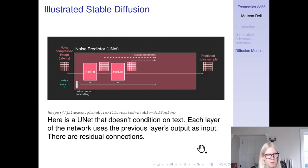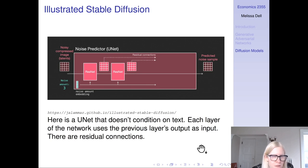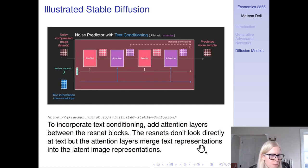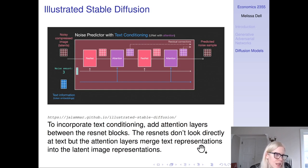Let's first explain how the U-Net module works without text conditioning, just doing unconditional image generation. The U-Net consists of ResNets with residual connections for the reasons we've seen earlier in the course, and each layer uses the previous layer's output as input. Now we want to be able to condition on the text. The way we do that is to add attention layers between the ResNet blocks, which also have residual connections. The ResNets don't look directly at the text because they take the image as input, but the attention layers merge text representations into the latent image representations, which are then fed into the next layer of the ResNet. With this attention layer that attends to the text and combines that with the ResNet latent representation of the image, that's how we condition on text.